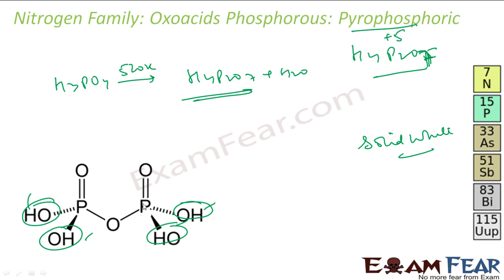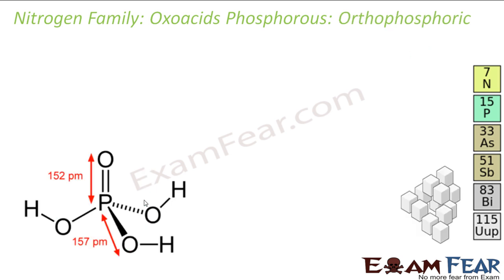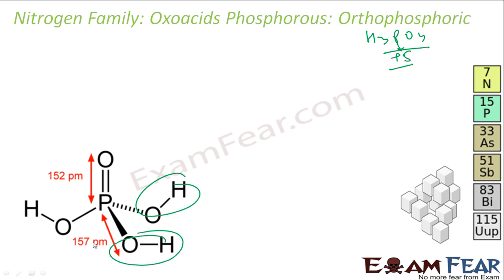The next is orthophosphoric acid, which is H3PO4. The oxidation state of phosphorus is +5. It is also called phosphoric acid. It is a triprotic acid — it has three OH groups. It is a white crystalline solid.